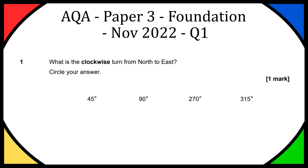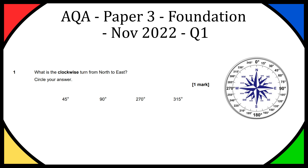Hey everyone, so we're going to be going over the question: what is the clockwise turn from north to east? Circle your answer — it's a one mark question and we have four options of 45, 90, 270, or 315 degrees. I think the best way to explain this question is by bringing up a compass.